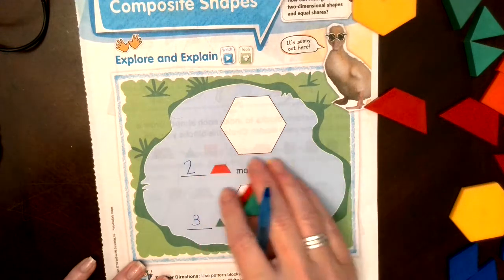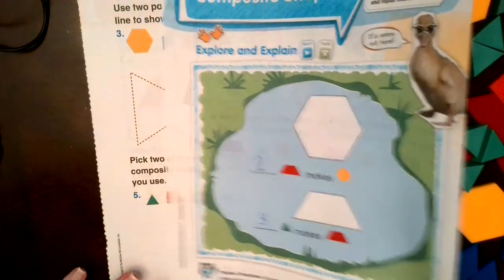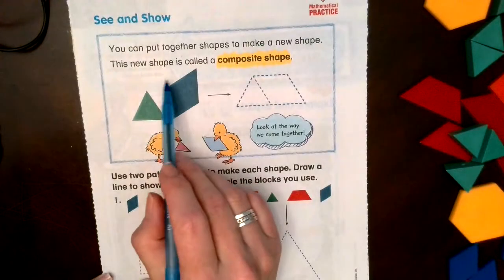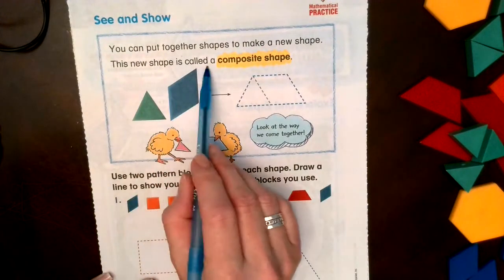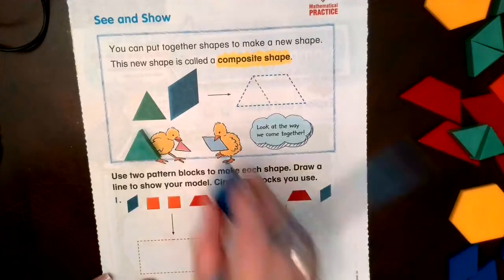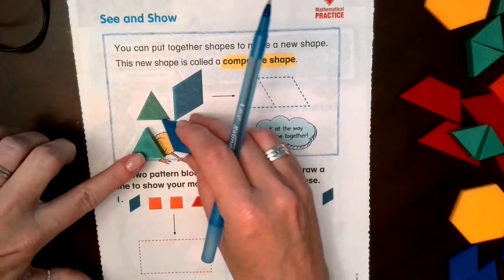All right, let's look at the next page. You can put together shapes to make a new shape. This new shape is called a composite shape. So if I take a triangle and a rhombus and I squish them together, it makes a trapezoid.